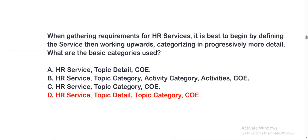Next question: When gathering requirements for an HR service, it is best to begin with defining the service, then working upward, categorizing in progressively more detail. What are the basic categories used? Option A: HR service, topic detail, COE. Option B: HR service, topic category, activity category, activities, COE. Option C: HR service, topic category, COE. The correct option is option D.